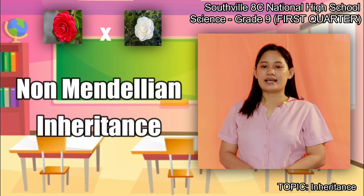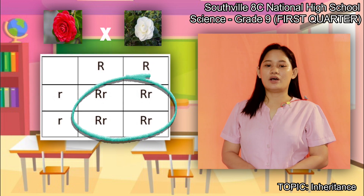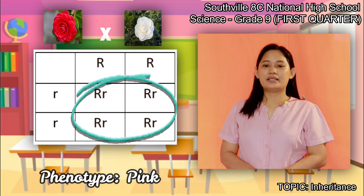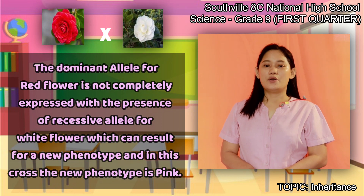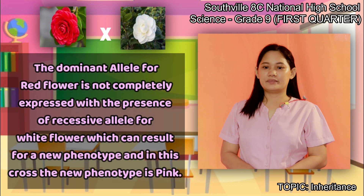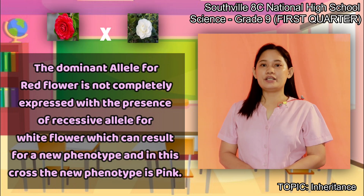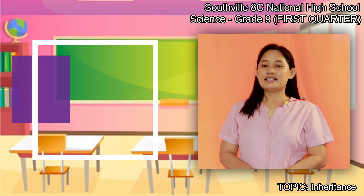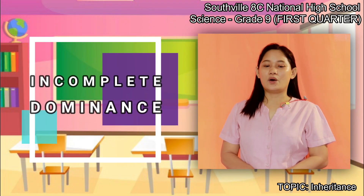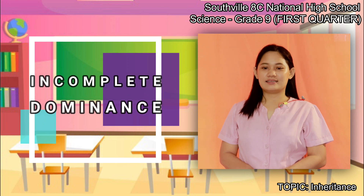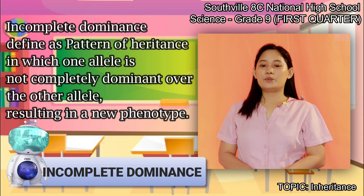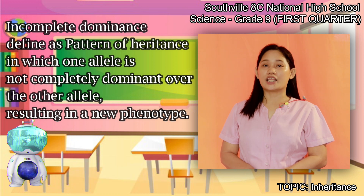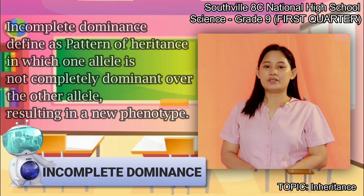In non-Mendelian inheritance, the possible phenotype of all offspring is pink. The dominant allele for red flower is not completely expressed with the presence of the recessive allele for white flower, which can result in a new phenotype — in this cross, the new phenotype is pink. This non-Mendelian pattern of inheritance is called incomplete dominance, defined as a pattern of inheritance in which one allele is not completely dominant over the other allele, resulting in a new phenotype.